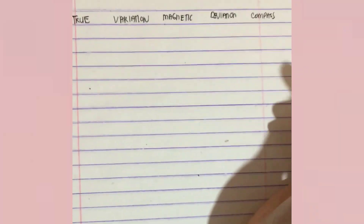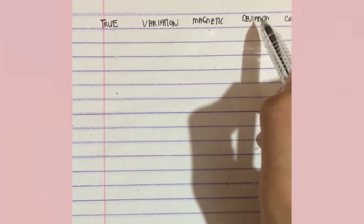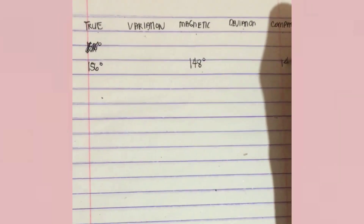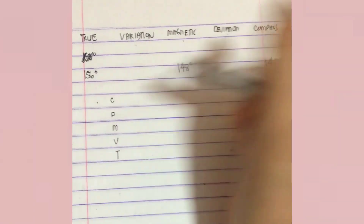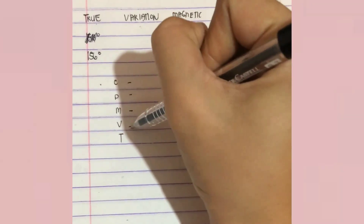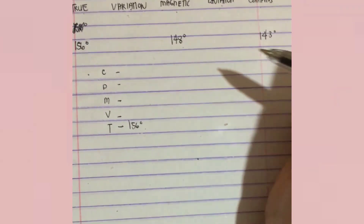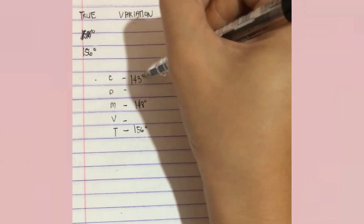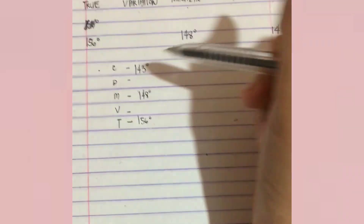Now we know how to compute when true north, magnetic north, deviation, or compass north is missing. What if both variation and deviation are missing? For example, given true north is 156 degrees, magnetic north is 148 degrees, and compass north is 143 degrees. We need to find the deviation and variation.